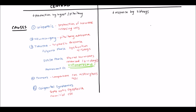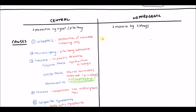That covers the causes of central diabetes insipidus. Now let's look at nephrogenic causes. Hereditary causes include a V2 receptor mutation — the body produces enough ADH, but the V2 receptor is not responding or attaching as it should. Interestingly, the V2 receptor gene is located on the X chromosome, making this X-linked recessive and more prevalent in males.